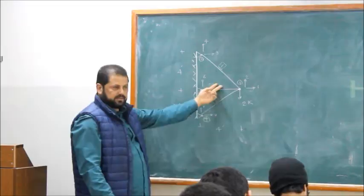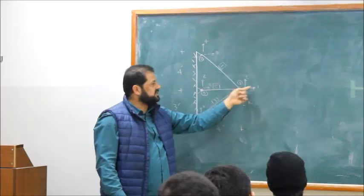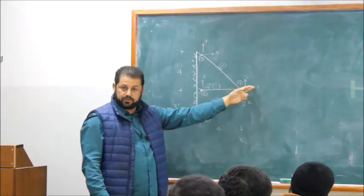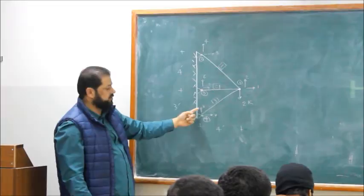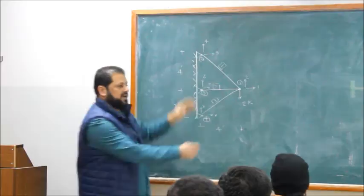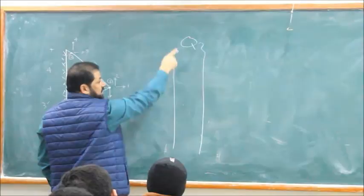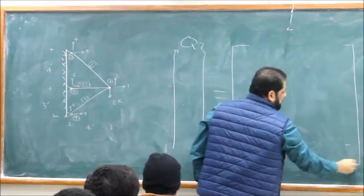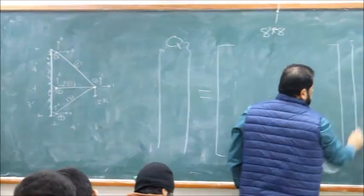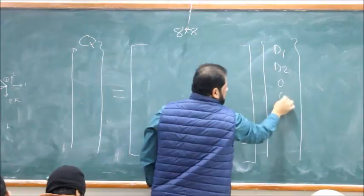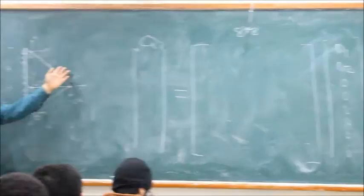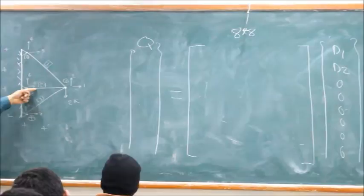We start with this exam. We identify the joints, then we identify the unknowns. We have two non-displacements D1 and D2, and we have Q1 equals 0, Q2 equals minus 2. Then we have Q3, Q4, Q5, Q6, Q7, Q8. So we have Q, which is an 8 by 1 vector, equal to the global stiffness matrix — 8 by 8 — times the displacement vector. We should find D1 and D2; the rest are zeros: D3, D4, D5, D6, D7, D8 are all zero.